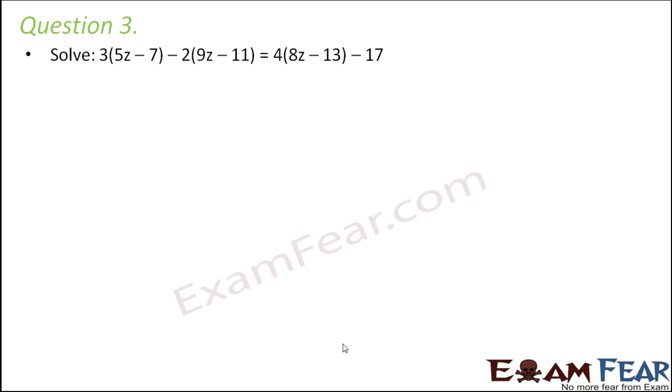Question number 3. Solve 3(5z-7) - 2(9z-11) = 4(8z-13) - 17. So this is pretty much simple. So all we need to do is we just calculate the values.